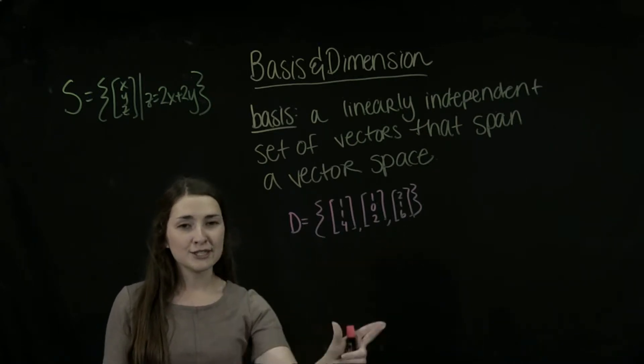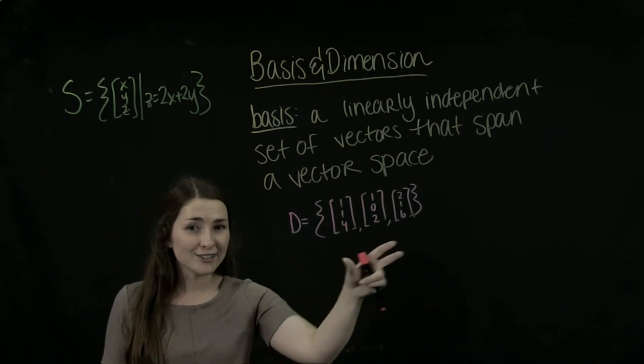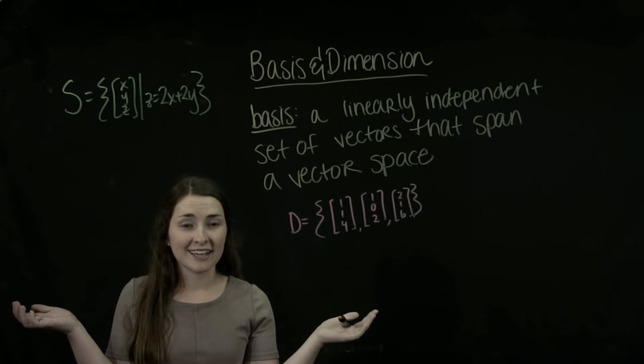But also, if we put these into a matrix, since we have three matrices or three vectors of size 3, we can throw this into a matrix, have a 3 by 3 matrix, find the determinant, and whoops, it's equal to 0.